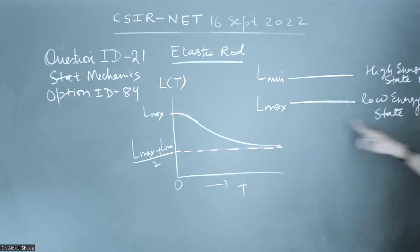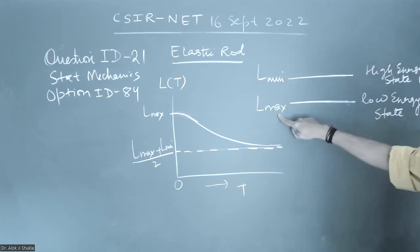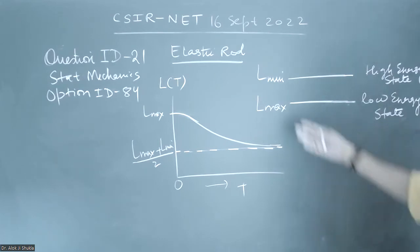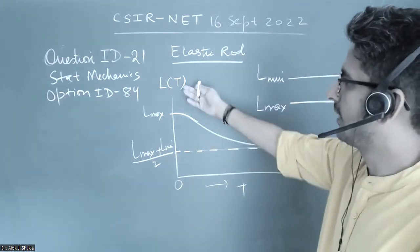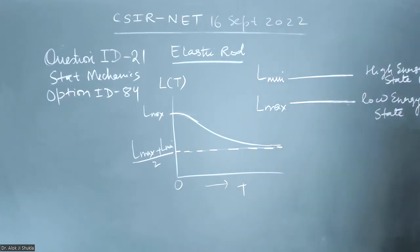It is given that at low energy state L will be taking its maximum value and at high energy state L will be taking its minimum value. We don't have to bother about that. We just have to see what will be the probable graph of equilibrium length and temperature.